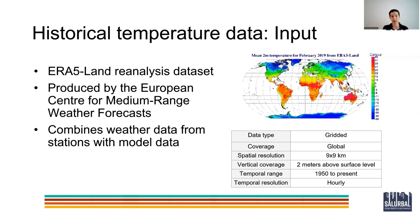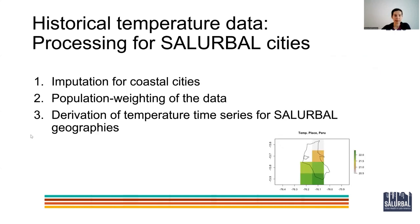The ERA-5 land reanalysis is available from 1950 to present and is originally available at an hourly temporal resolution. This is the description of the original dataset, and of course we needed to subject it to a few processing steps in order to create exposure metrics for Solar Bell. There were three main processing steps, and I'll go over each of them in detail.